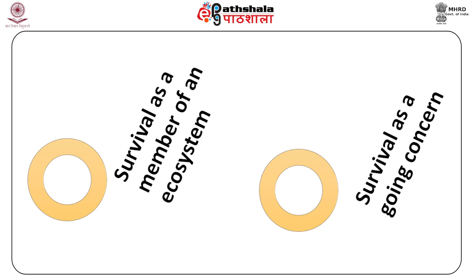Innovation and openness enable survival in two ways, as suggested by Nambison and Viron (2012). First, survival as a member of an ecosystem requires the entrepreneur to identify opportunities within the system — exploring internal opportunities and expanding existing offerings compatible with the platform provided by the leader. Second, survival as a going concern, independent of the leader company, requires entrepreneurs to recognise external opportunities outside the ecosystem, allowing the company to expand its offerings independently.